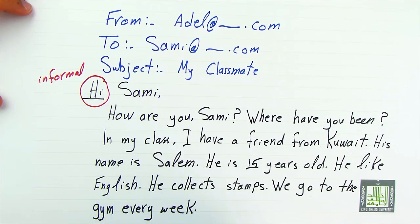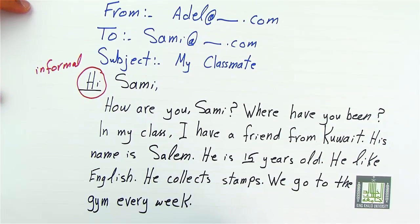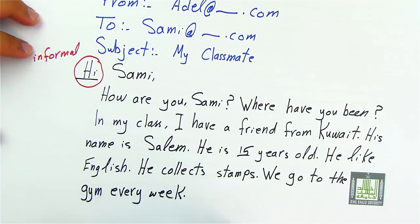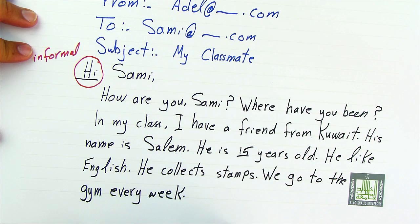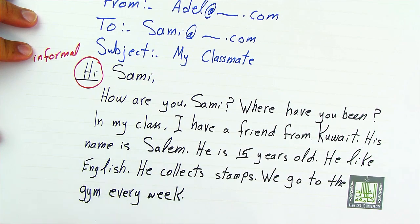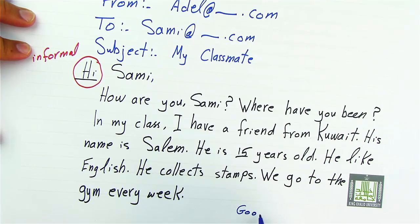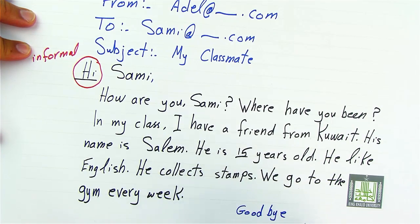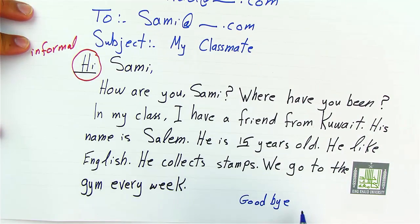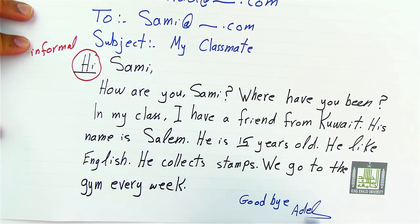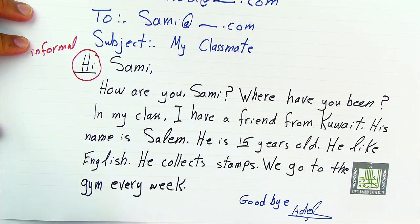After finishing the email, I have to close it with parting words — words that show you have finished your email. For example, you say 'Goodbye' and then sign your name, which is Adil. This is all about writing an email about a classmate. Thank you very much, my students, and see you in the next lesson.